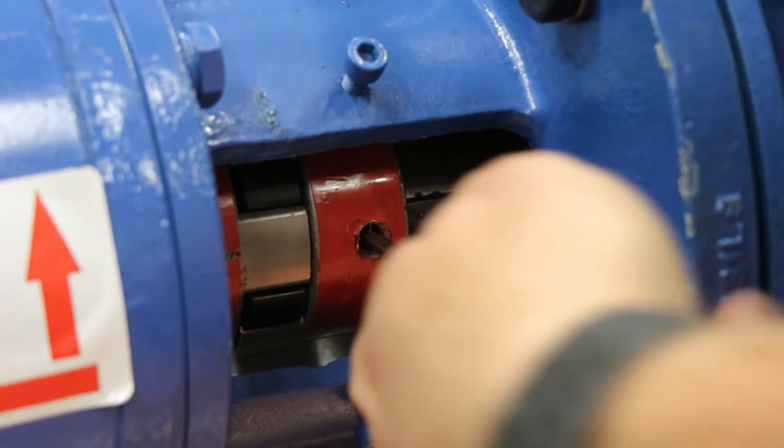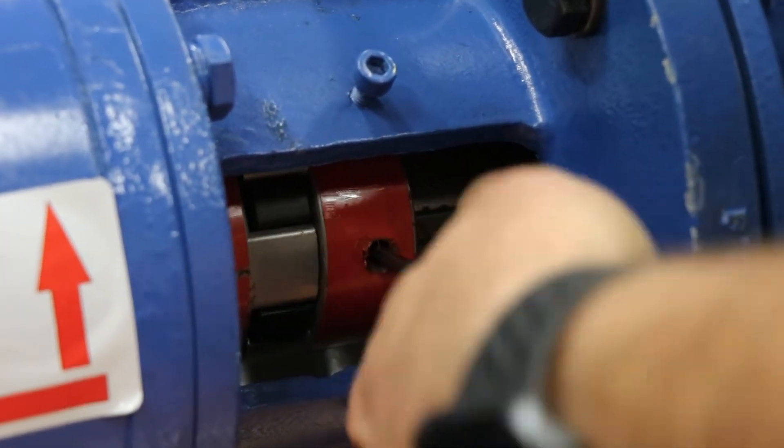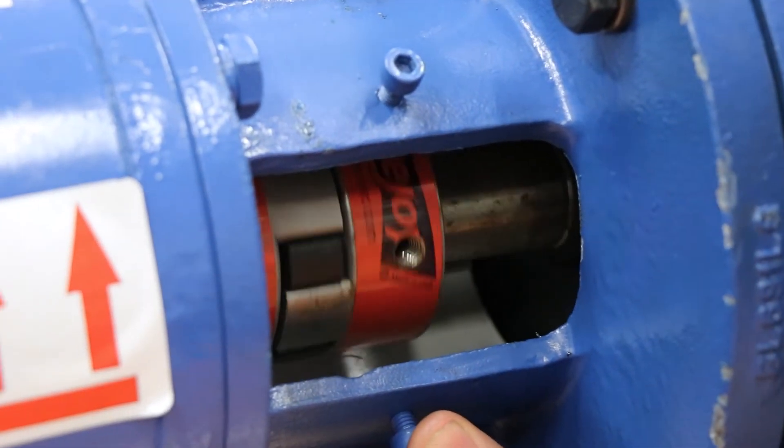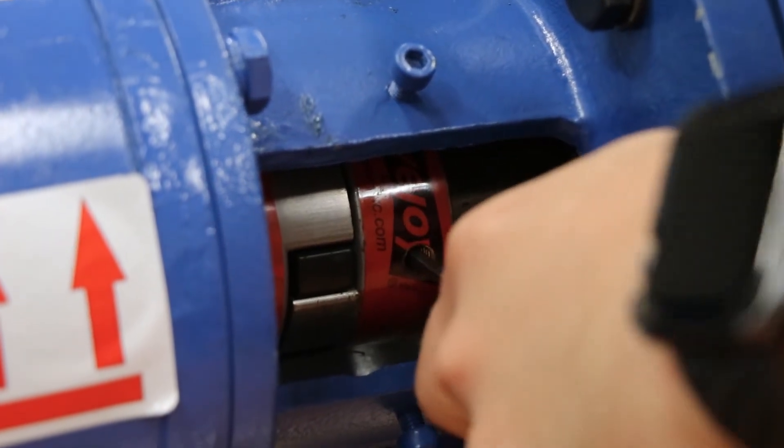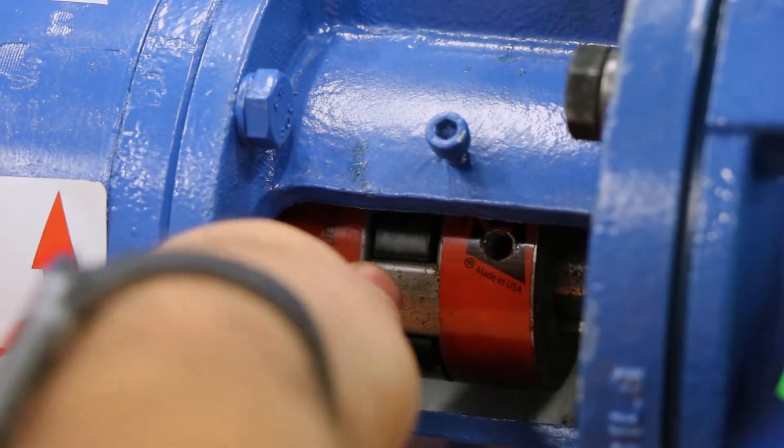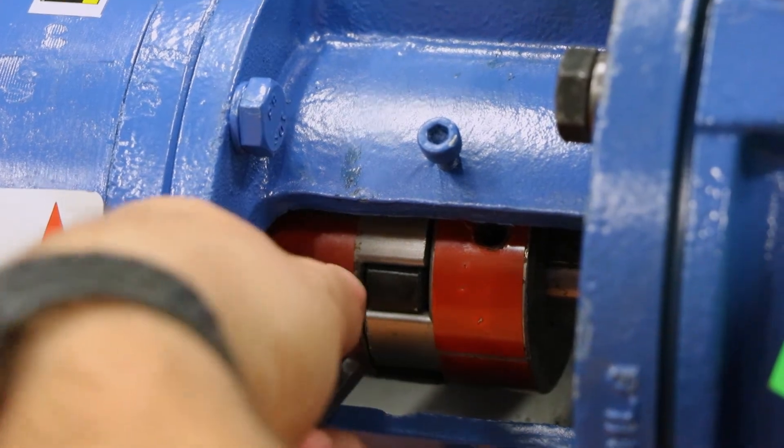There are two set screws on each half of the coupling. You want to go through and do the first one, then rotate the shaft 90 degrees to get to the second one. Tighten up both, get them nice and snug. Then you want to do the same thing to the reducer side as well. They also have two set screws both at 90 degrees apart. Go through, tighten up both set screws, and you're good to go.